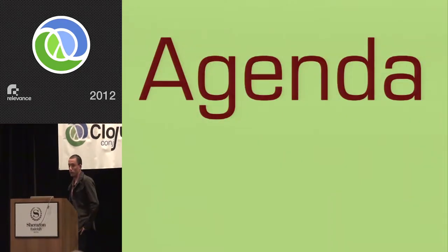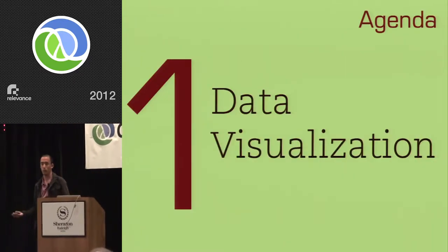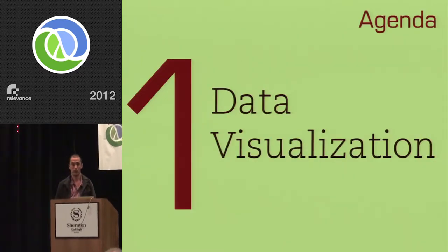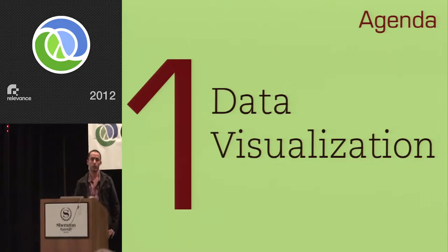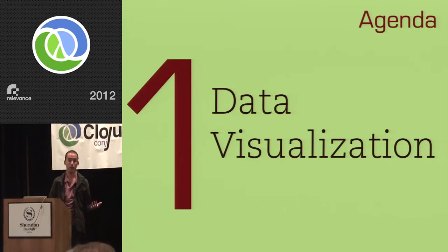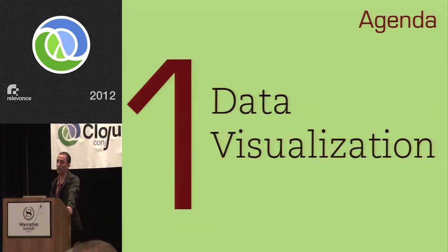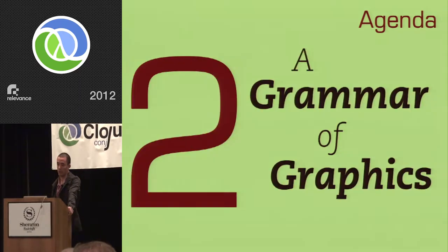The agenda for the talk is in two parts. The first part I want to talk broadly about data visualization — what's out there, what I mean when I say data visualization, how you go about doing it in terms of tooling, and the 101 of human perception and mapping data to visual things. That's going to lead me to the second part: building a grammar of graphics.